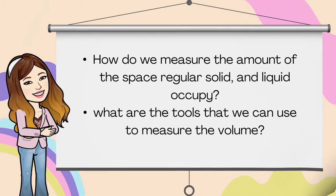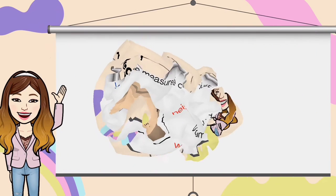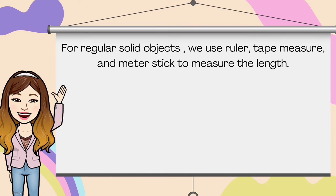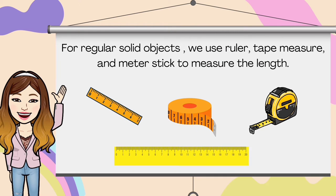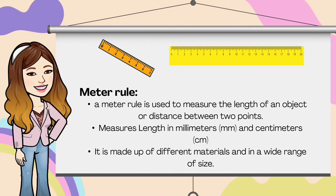For regular solids, volume is the measure of the size of an object. We measure the length, the width, and the height to get the volume of a regular solid. We use a ruler, tape measure, or meter stick to measure the length. A meter rule is used to measure the length of an object or distance between two points. It measures length in millimeters and centimeters and is made of different materials in a wide range of sizes.